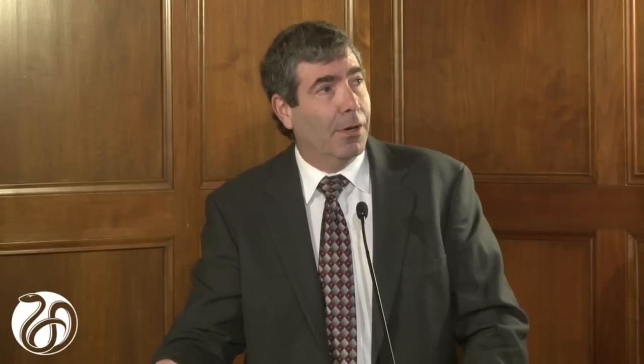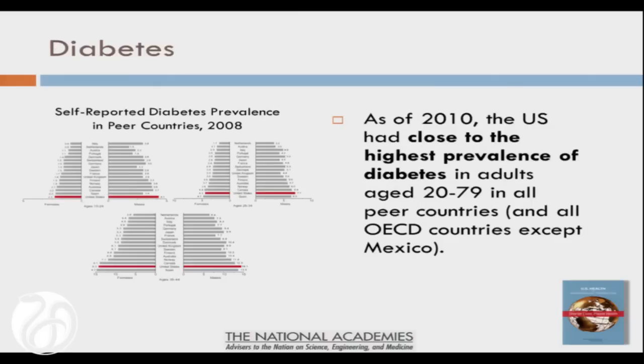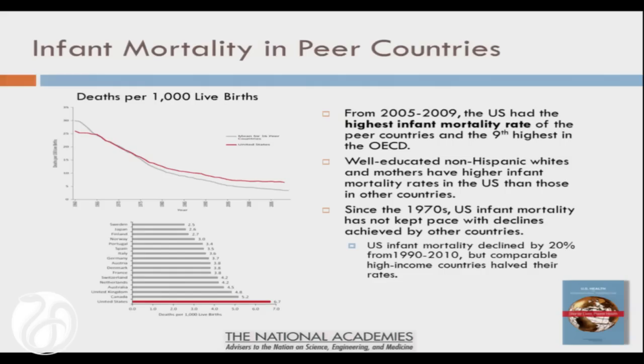Even among so-called advantaged Americans, we're doing worse than advantaged folks in other high-income countries. I think there's something even more systemic going on in terms of the determinants of health. Looking at modifiable risk factors, the pattern is the same: America leads the world in BMI and obesity — you see the red bars at the bottom for various age groups. If we look at diabetes, a condition very much related to obesity as a risk factor, you see the same pattern.